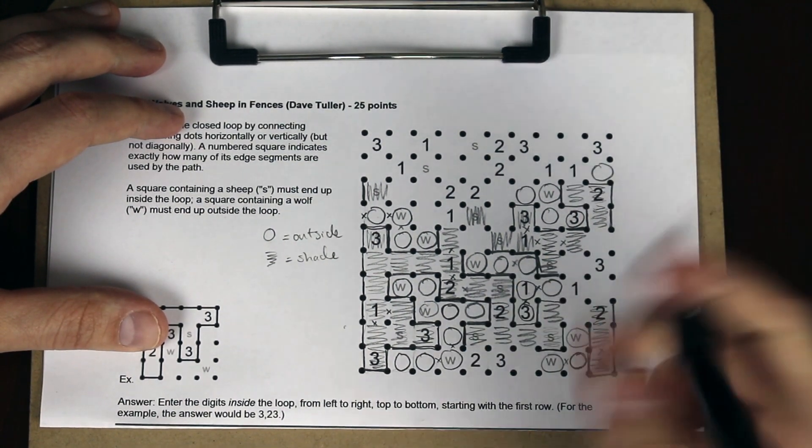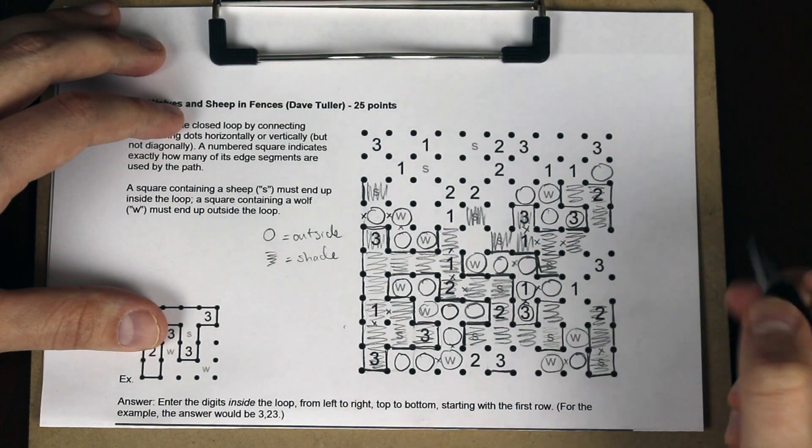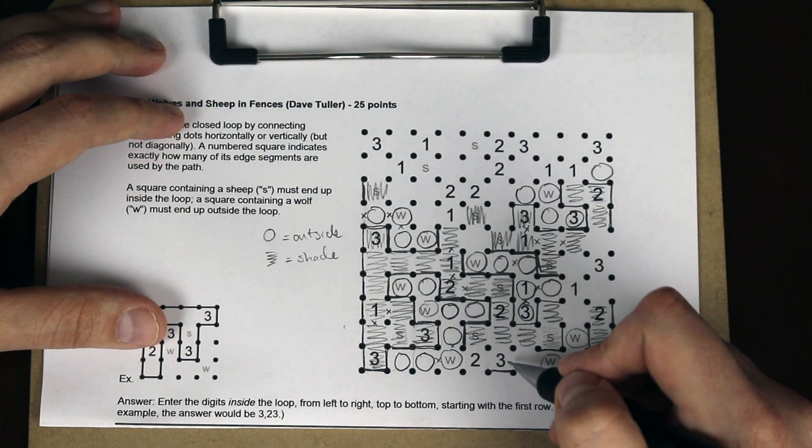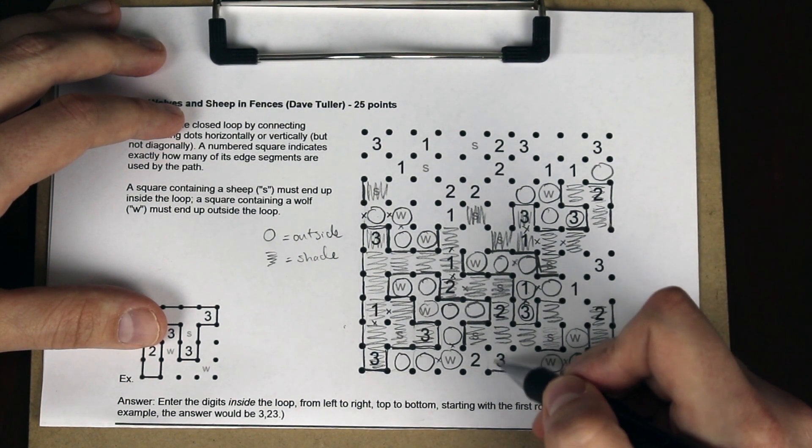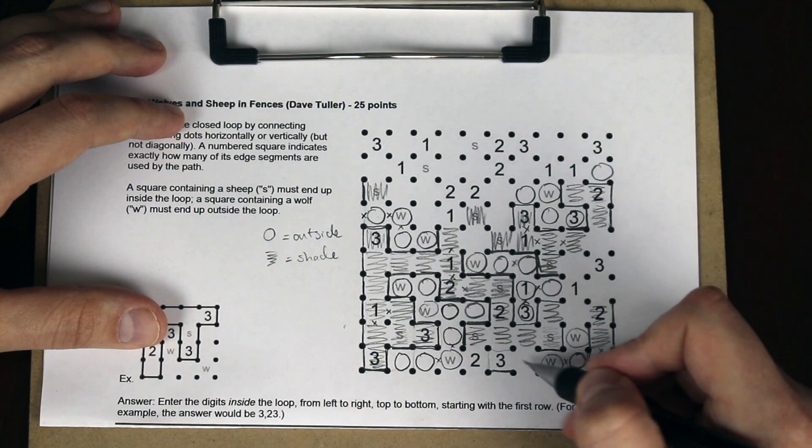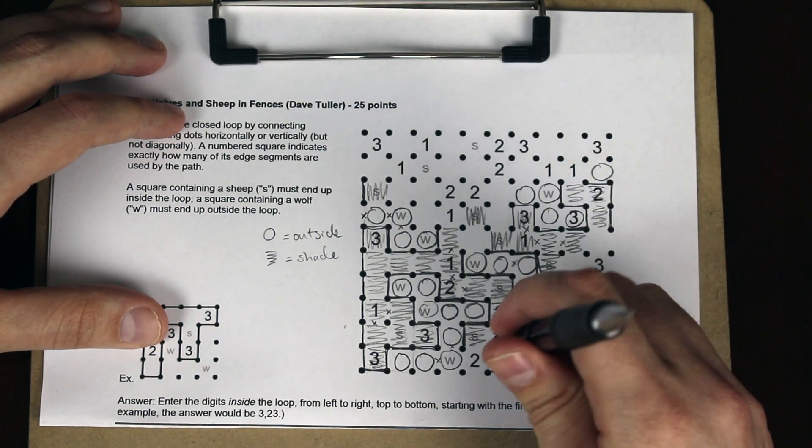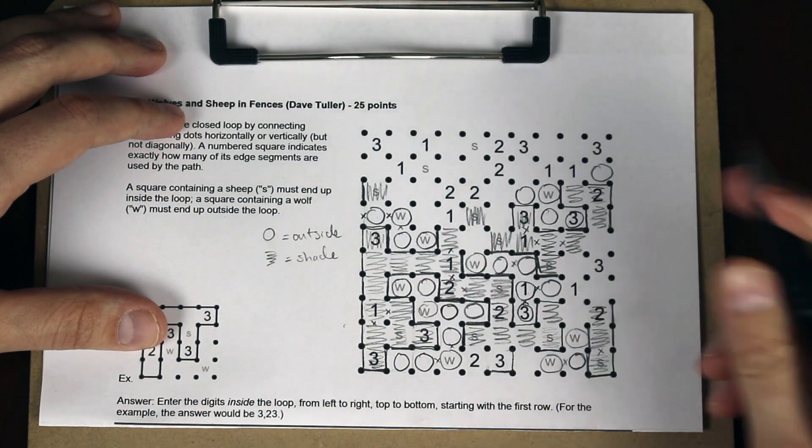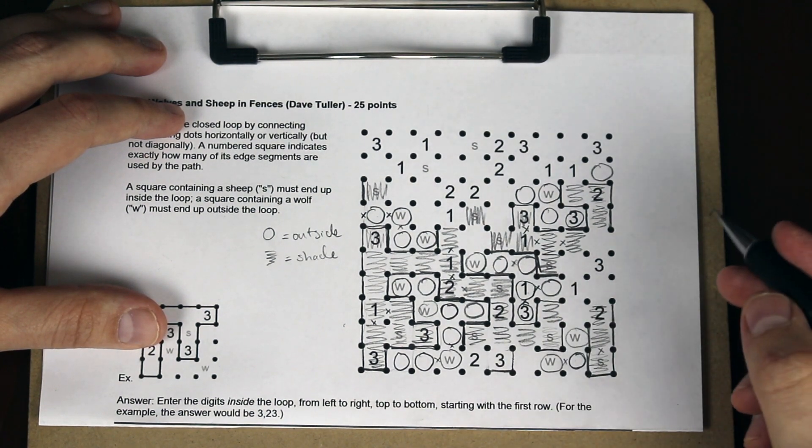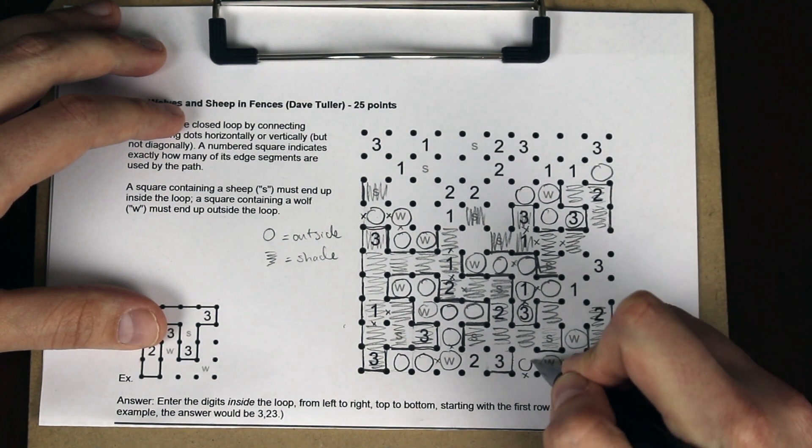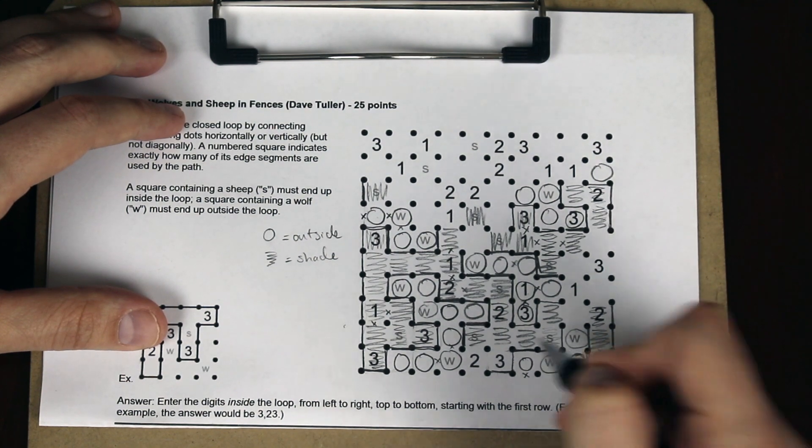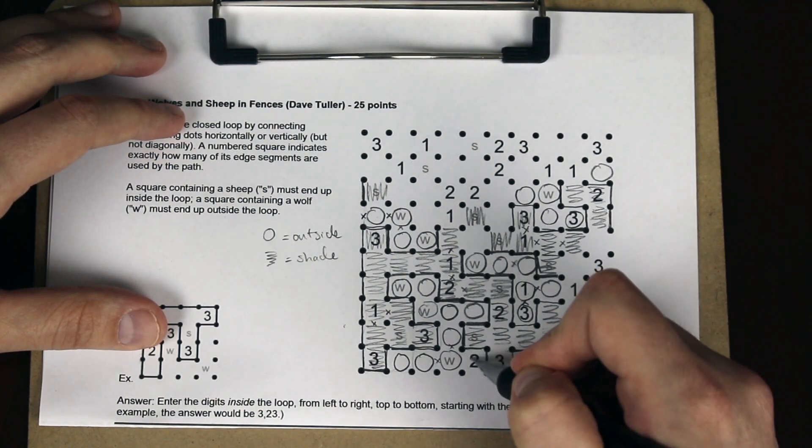If it were to go all the way to the right, that two could not escape. That tells us this is outside the loop here. And that fills in the rest of the three and the two there.